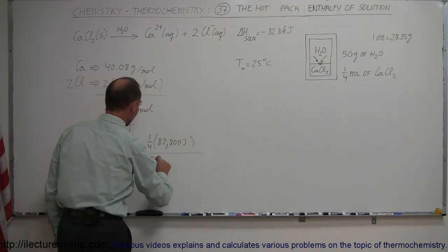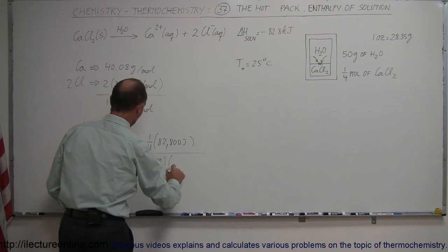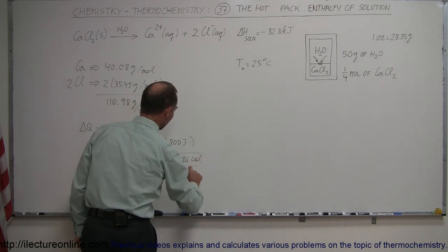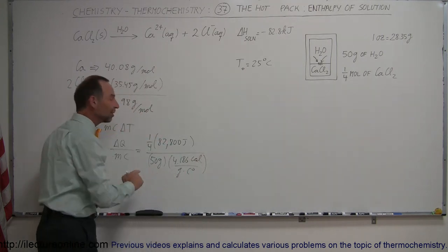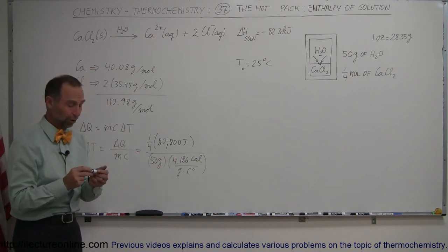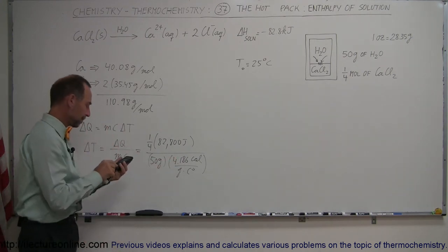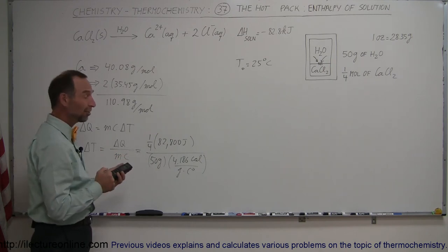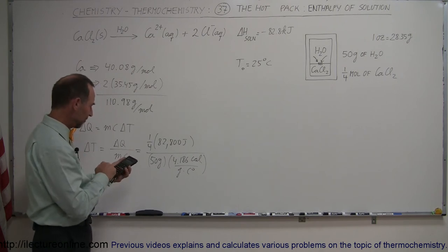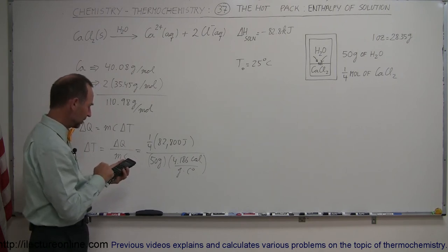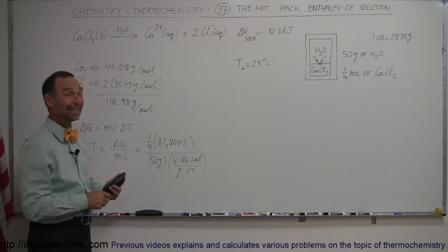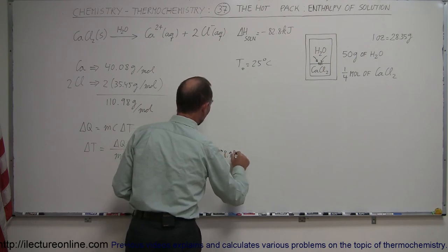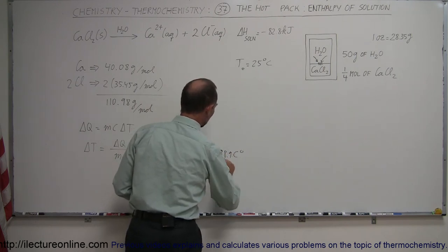We divide that by the mass of the water, in this case 50 grams, and the specific heat of water would be 4.186 joules per gram per centigrade degree. That's why we can leave this quantity in grams, because we have the specific heat in terms of grams as well. So let's find out: 82,800 divided by 4, which is 20,700 joules of energy being released, divided by 50 and divided by 4.186, and wow, 98.9 degrees centigrade degree temperature change. That's quite a bit. That would make that water boil.